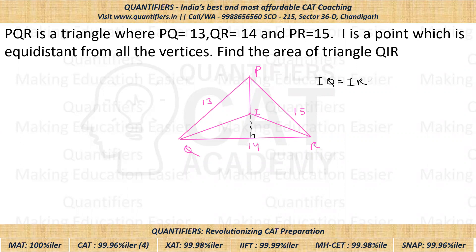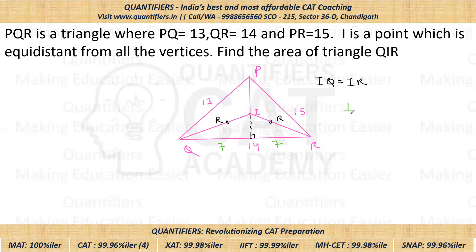We know that IQ = IR = circumradius R, so triangle QIR is isosceles. By the isosceles triangle property, the altitude to the unequal side QR is also the median. So the perpendicular from I bisects QR, giving two equal halves of 7 each. We just need to find the height x.